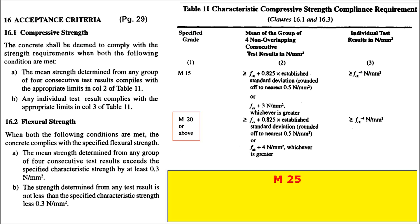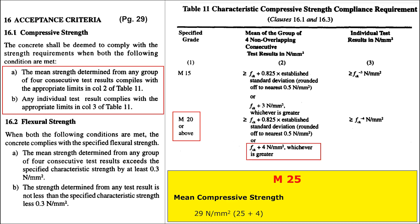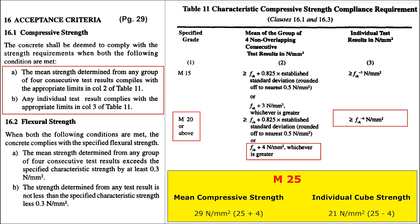For example, if the grade of concrete is M25, then to satisfy the acceptance criteria, the mean compressive strength of the group of four consecutive test results shall be 29 N/mm², which is 25 plus 4, and the individual cube strength shall not be less than 21 N/mm², which is 25 minus 4.